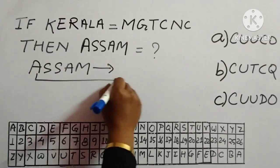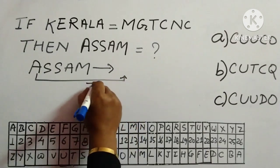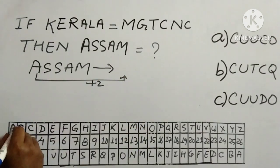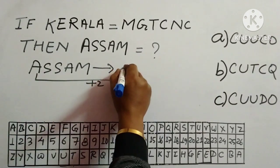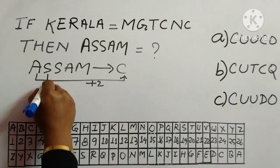So what we have to do? We have to add plus 2. So A then B, C. So we will write C first. Then again,